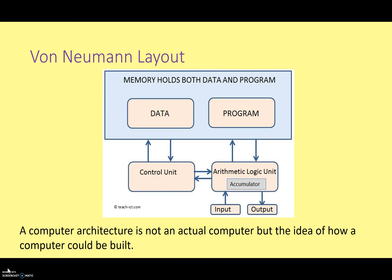Here is the classic diagram. If you do a search for von Neumann architecture on Google Images, you will get lots of very similar diagrams. At the top, we've got the key point that the memory holds both the data and the program. We also have the control unit, the arithmetic logic unit, inputs, outputs, and accumulators. One point to make is that when we talk about computer architectures, we're not talking about a specific design for a specific computer system — we're talking about something more abstract that can be applied to lots of different computers, as the von Neumann architecture was.